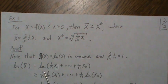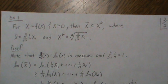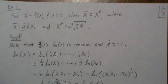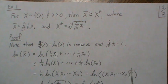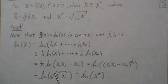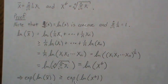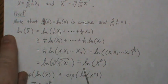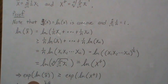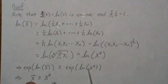We can factor out 1/n and write the sum of log(x_i) as log of the product, then bring the 1/n up as an exponent — that's the n-th root of the product, which is the geometric mean. So we have log(x̄) ≥ log(geometric mean). Exponentiating both sides, the natural logs cancel and we get x̄ ≥ geometric mean. That's a nice little proof using Jensen's inequality.